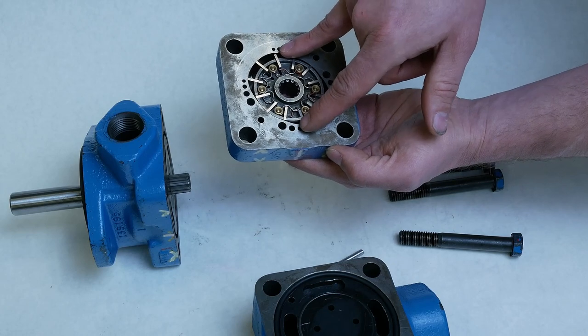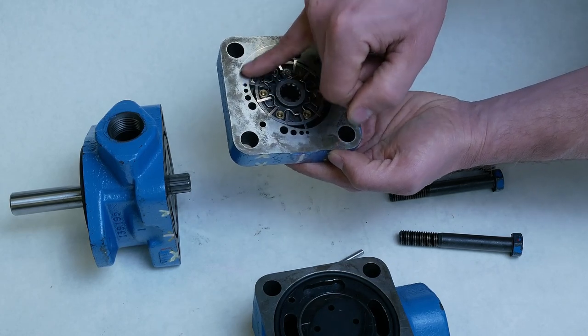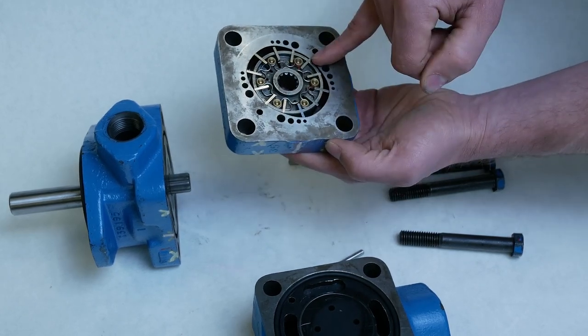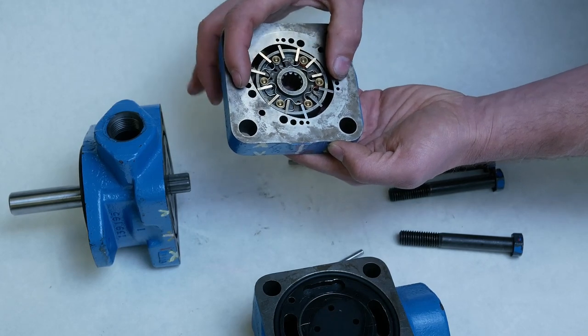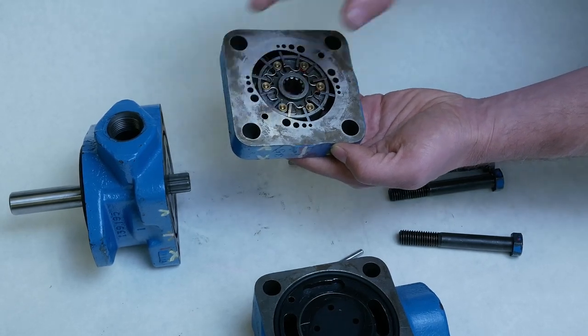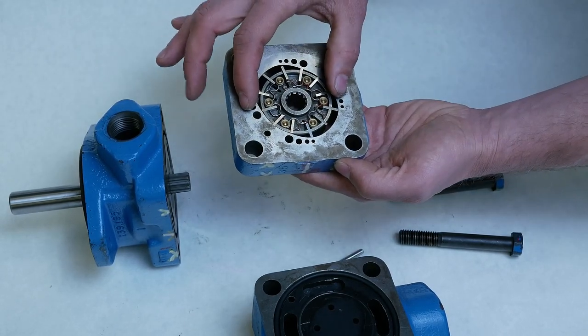If we sent pressurized oil into B, then that would cause this rotor to turn in the opposite direction. So sending oil into the ports 180 degrees from each other establish the direction of rotation.